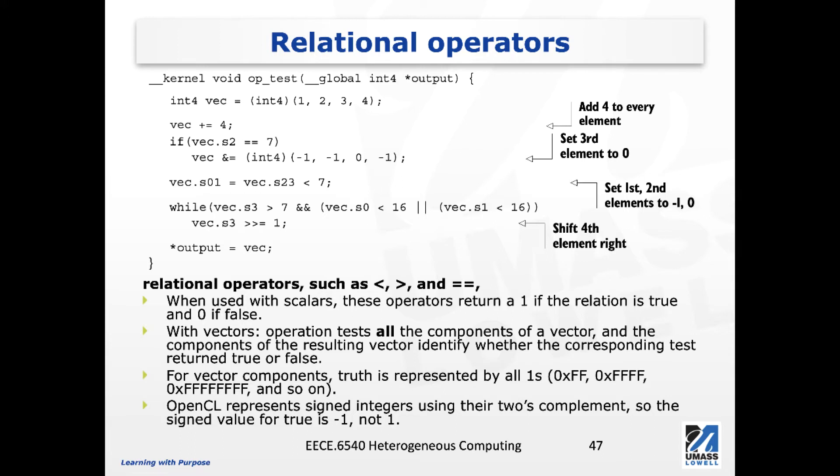Specifically, for vector components, we will use all 1s to represent the truth condition, and we will be using 0s to indicate false. Because OpenCL represents signed integers using two's complement, all 1s, depending on the number of bits, are all minus 1.